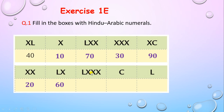Similarly, for LXXX: L is 50, and each X is 10. So 50 plus 10 plus 10 plus 10 equals 80. Whenever a smaller symbol comes after a bigger symbol, we add. C stands for 100 and L stands for 50.